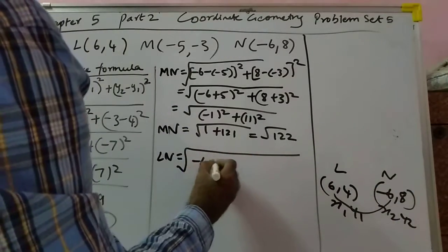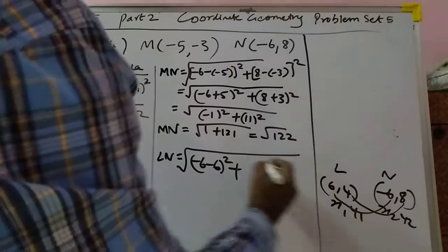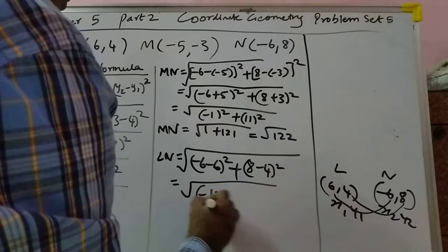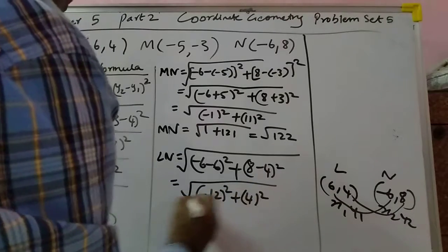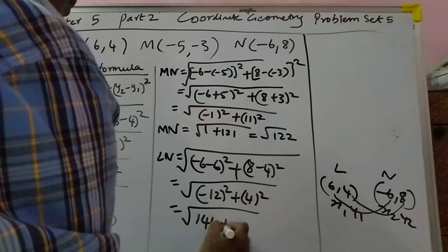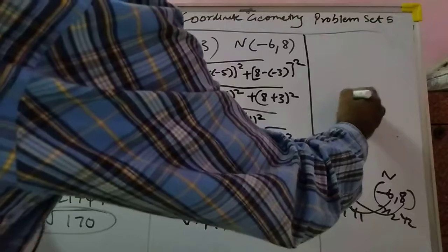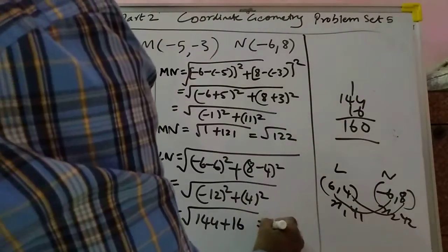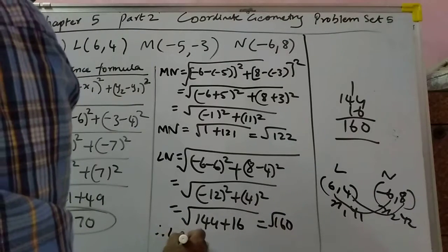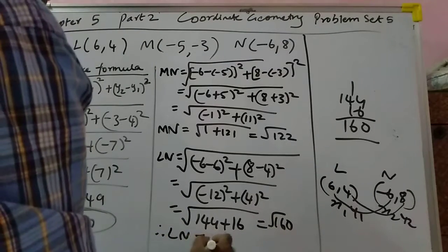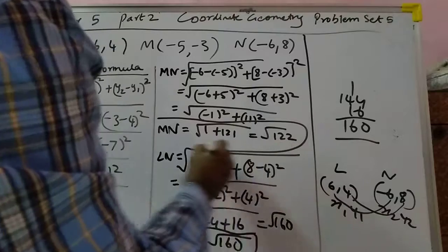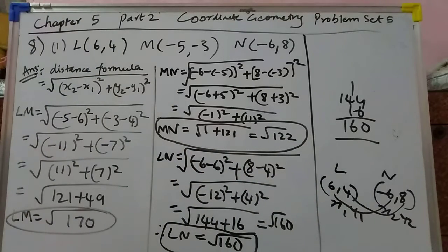For LN, that will become (minus 6 minus 6) the whole square plus (8 minus 4) the whole square, which is (minus 12) squared plus (4) squared, so that is 144 plus 16. Adding them gives root 160. Therefore LN is equal to root 160.